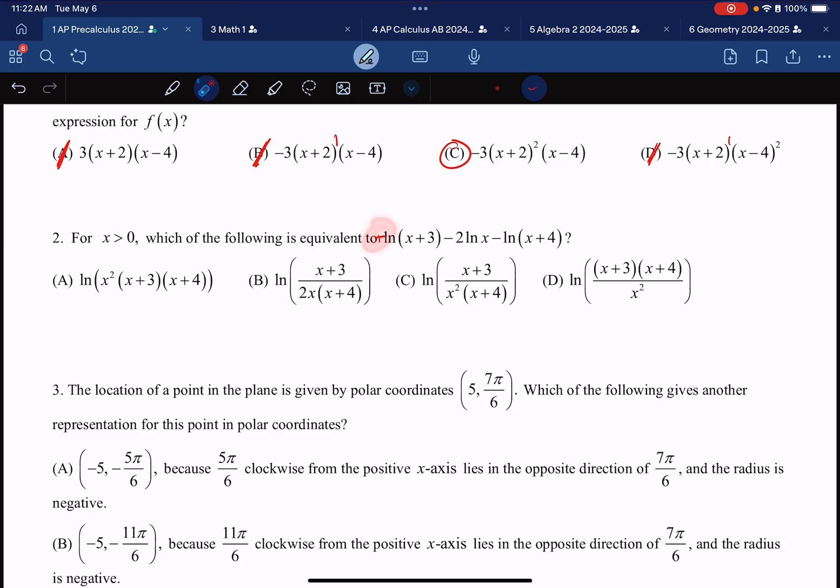Because we have a positive in front of this logarithm, this x plus 3 must reside in the top. x plus 3 is on the top, which really doesn't help us. I can basically ignore that entire term.